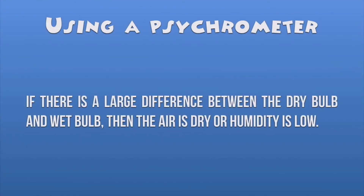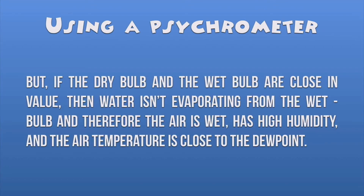After slinging, we look at the difference between the two thermometers. A large difference between the dry bulb and the wet bulb means the air is dry and humidity is low — the rate of evaporation from the wet bulb was high because the air can accept a lot of water vapor. The opposite situation — dry bulb and wet bulb close in value — means water isn't evaporating and the air is saturated with high humidity. We can say the air temperature is close to the dew point, indicating high humidity and potentially incoming precipitation or cloudy weather.